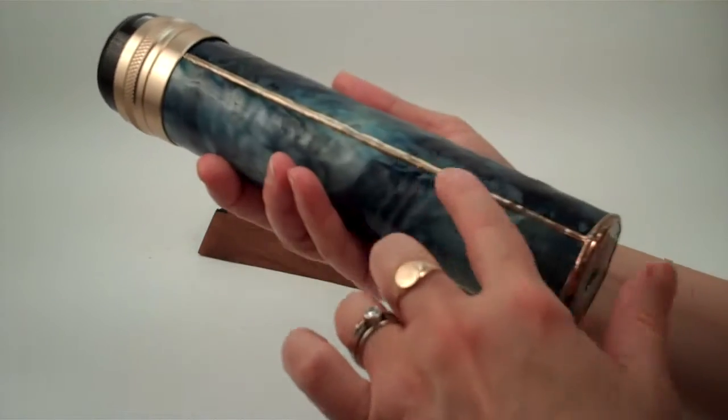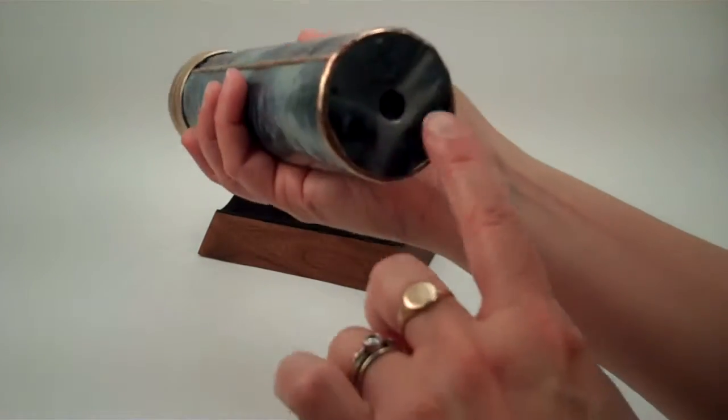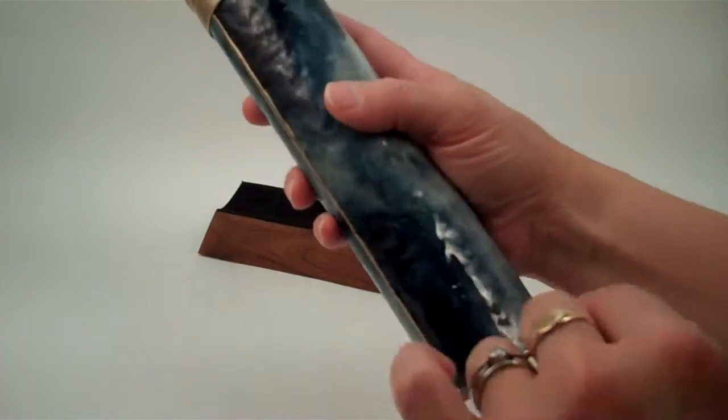He uses traditional copper foil stained glass technique to build the mirror system and build the kaleidoscope itself.